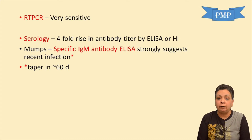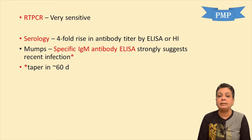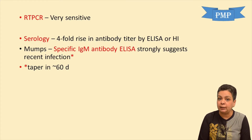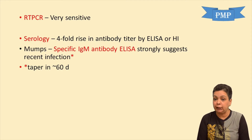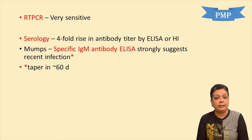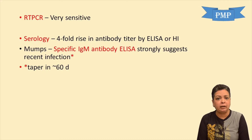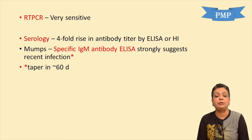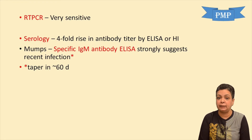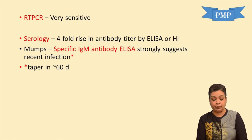Serology demonstrates a four-fold rise in antibody titer. We can use ELISA or hemagglutination inhibition tests. For definitive diagnosis, we detect specific IgM antibodies by ELISA. These strongly suggest recent infection. IgM antibodies generally taper within 60 days after infection.